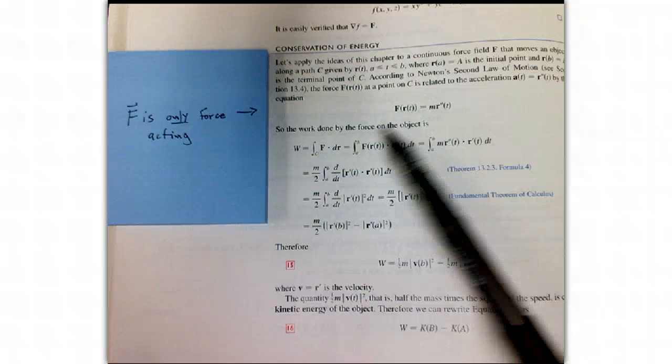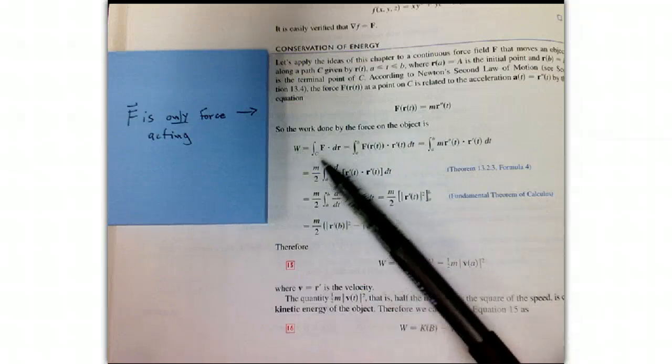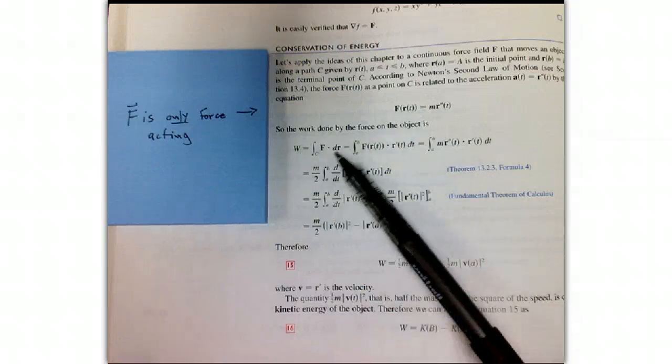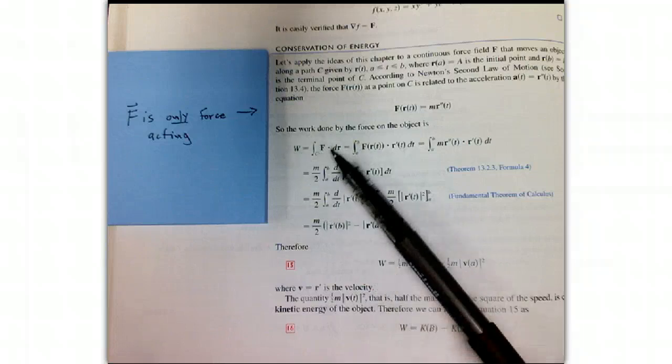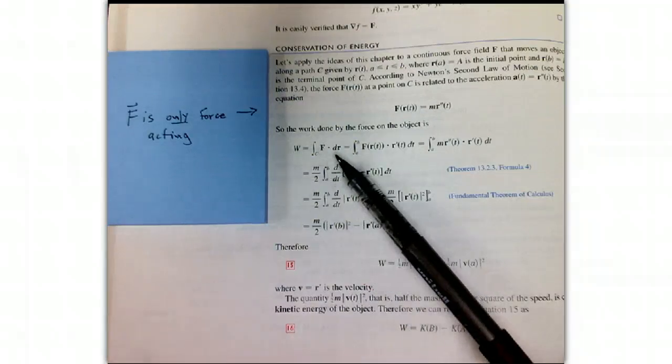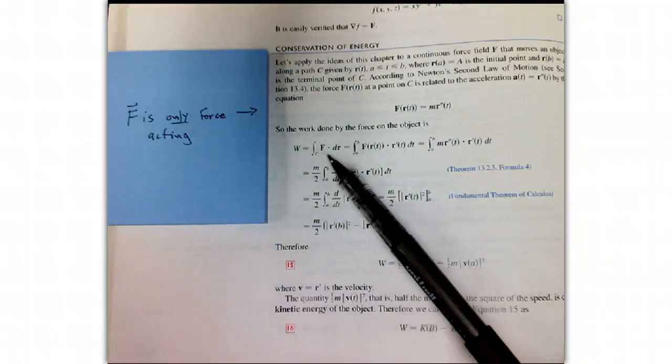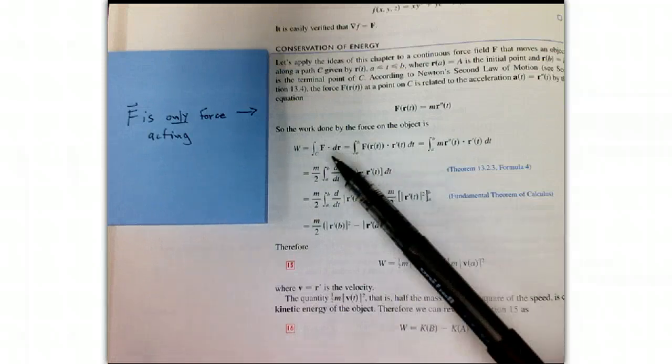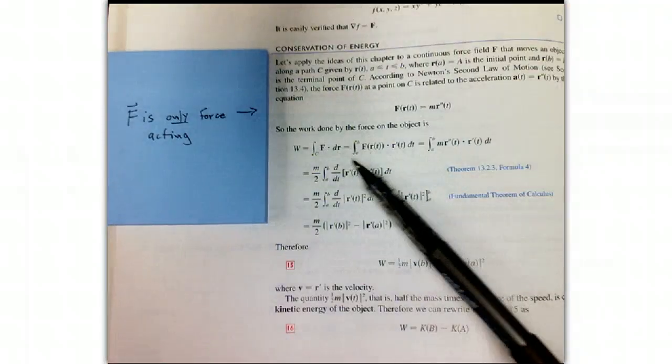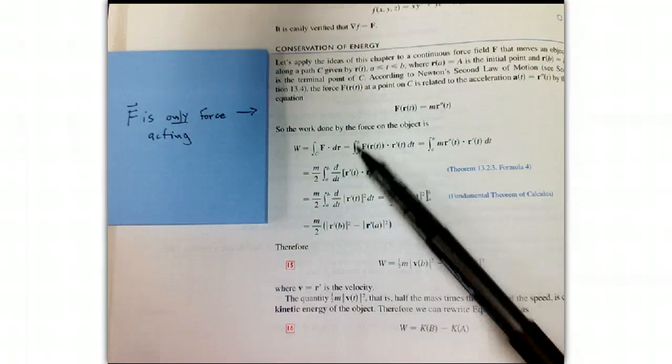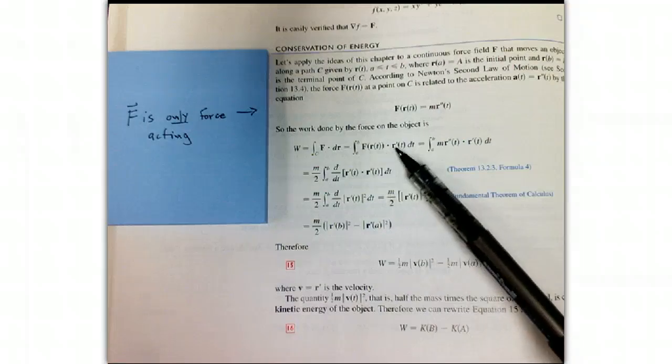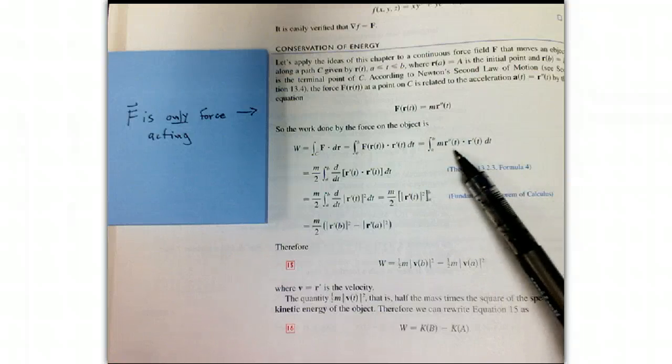So what we do is we calculate the work done by the force on the object. And really, in this book, we don't actually have a good idea of what work is until this point. Why do we calculate that? Why is that interesting? Well, this is going to tell us a lot about what that is physically. Well, if it's the only force acting, then we just parametrize. We get F times the velocity. That's interesting. That might relate to acceleration. We put in F equals MA.